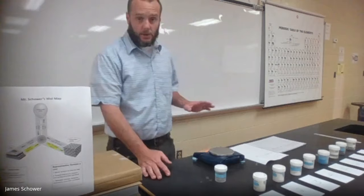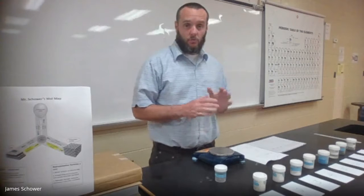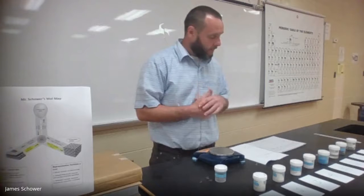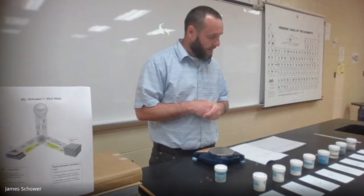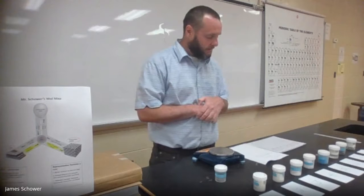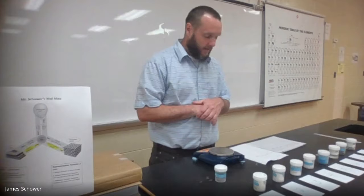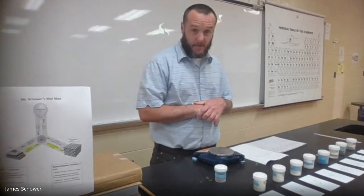On your data sheet, you're going to have to write down the information I give you right now. I'm going to go over the first column — substance formula — the second column — mass of sample and bottle — and the third column — mass of empty bottle. You're also going to do mass of substance, molar mass of compound, and the answer, which is the number of representative particles (R.P.) in the sample.